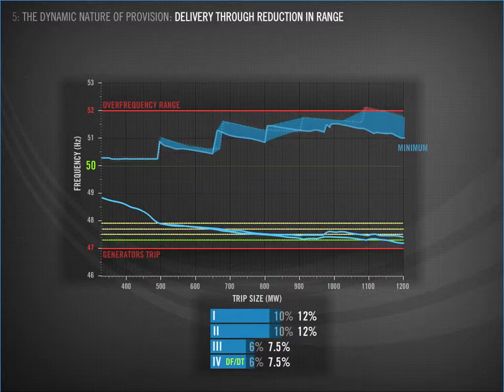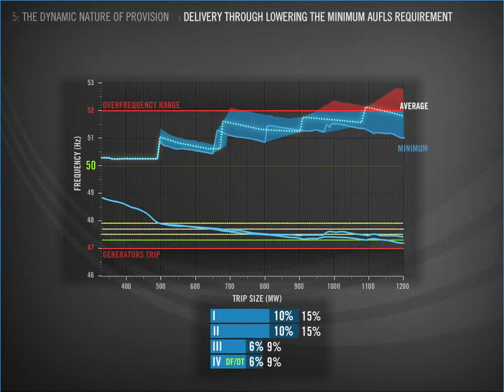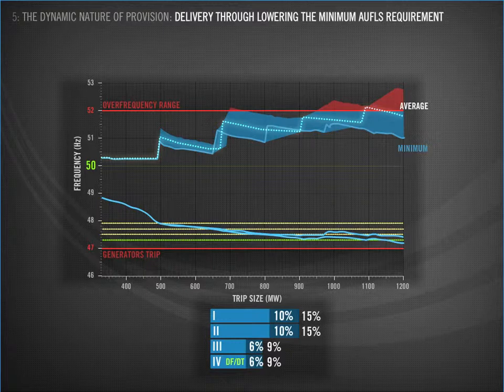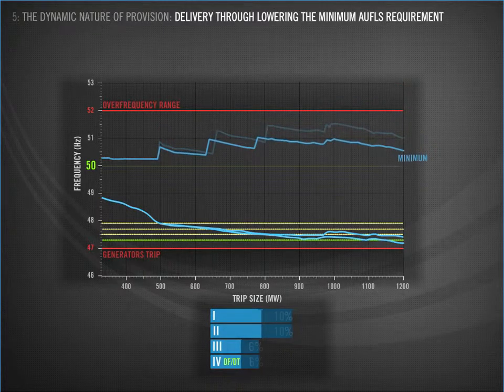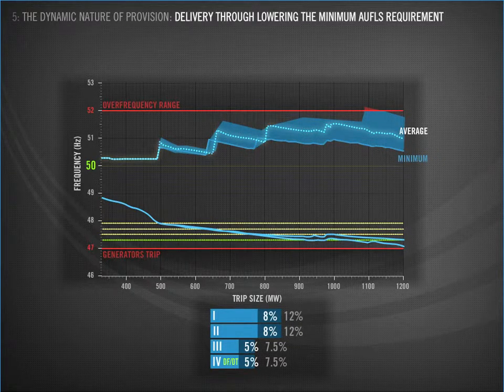Another way you can manage provision is to accept the fact that load is variable, and change the minimum level so that on average you achieve a better result. We have shown this on the sawtooth. You can see that by changing the minimum from 32% to 26%, the average sits where our minimum used to, and the maximum is slightly lower. Changing the minimum level does have a trade-off — the minimum frequency is now also lower, and the maximum disturbance you can cover at those times is smaller, but this method reduces the risk of over-frequency. It's really a trade-off about what failure is more likely: under-frequency or over-frequency.